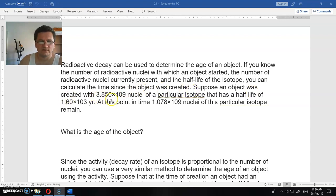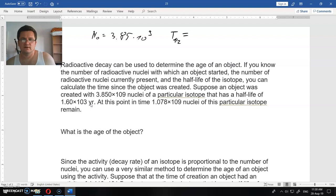Suppose an object was created with N₀ = 3.85 × 10⁹ nuclei of a particular isotope. This is the number that it started with. That has a half-life of 1600 years, or 1.6 × 10³ years.